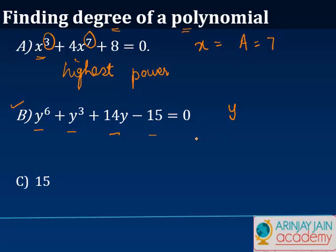What is the highest power of the variable? Let me call it HP. Here it is 6, here it is 3, here 14y to the power 1, right? So 1, 3, 6 - obviously 6 is the highest one, so we say that the degree of this polynomial is equal to 6.